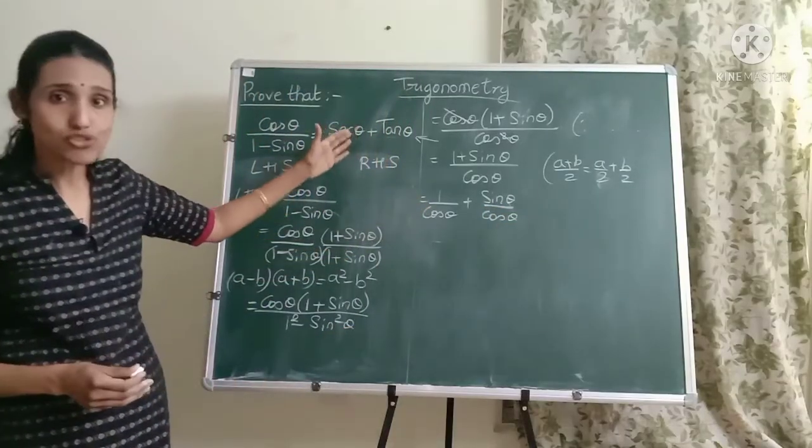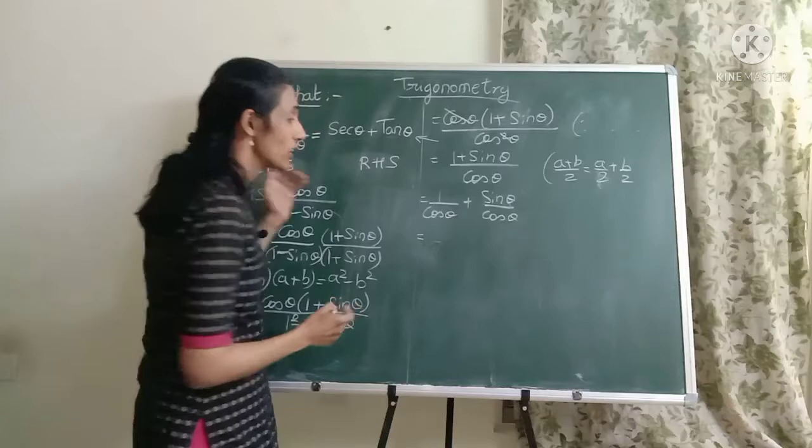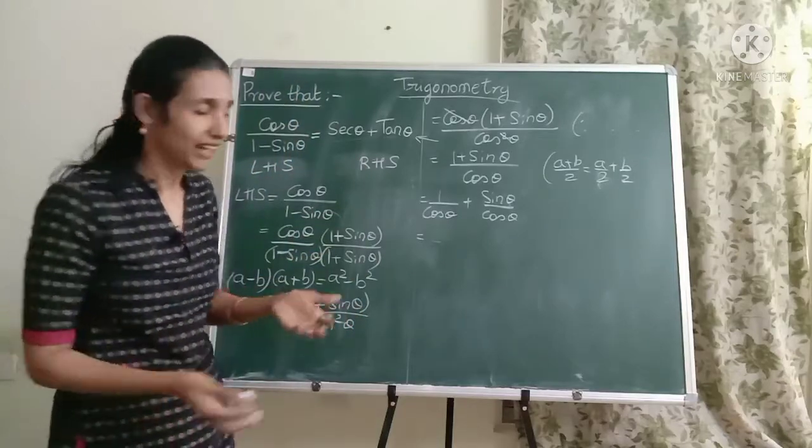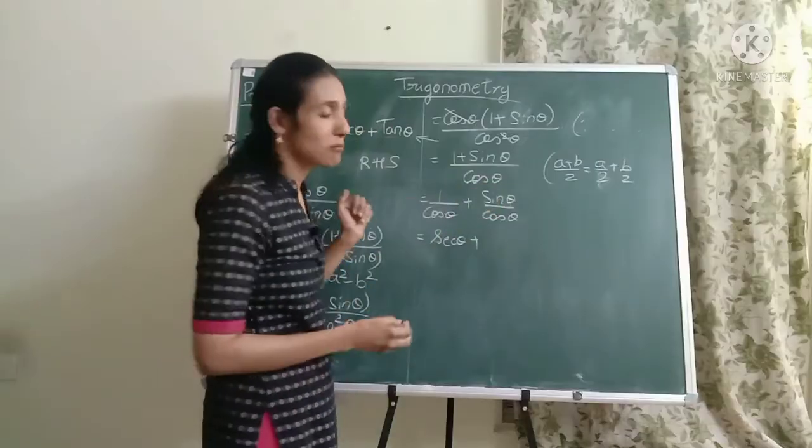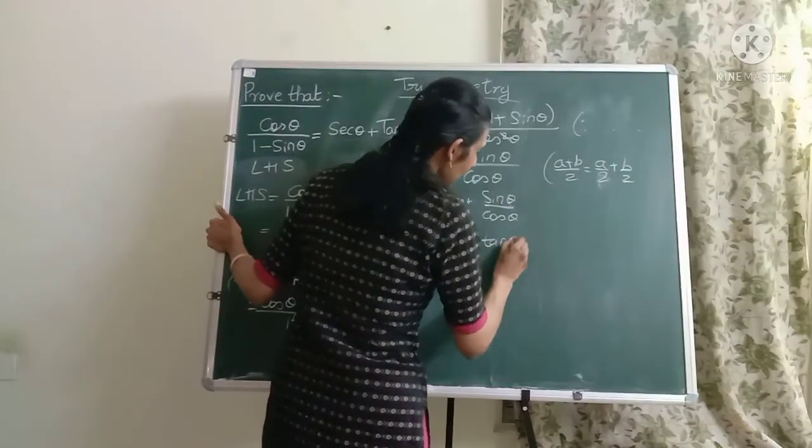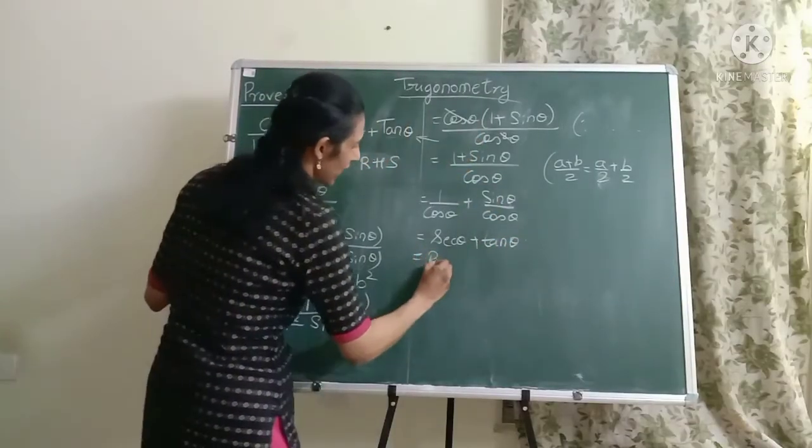So let's write this as 1 by cos theta plus sin theta by cos theta. See friends we are coming very close to what we want. Now what is 1 by cos theta? You all know that. Yes it is sec theta. And what is sin theta by cos theta? Definitely it's tan theta. And this is your right hand side.